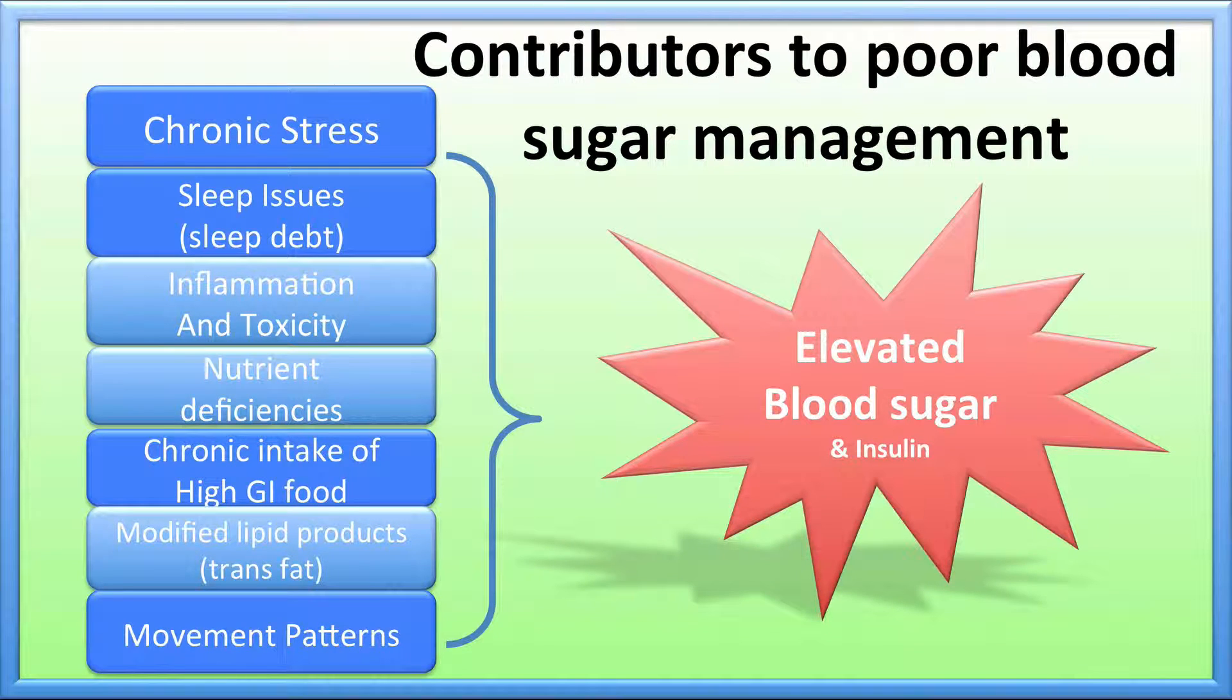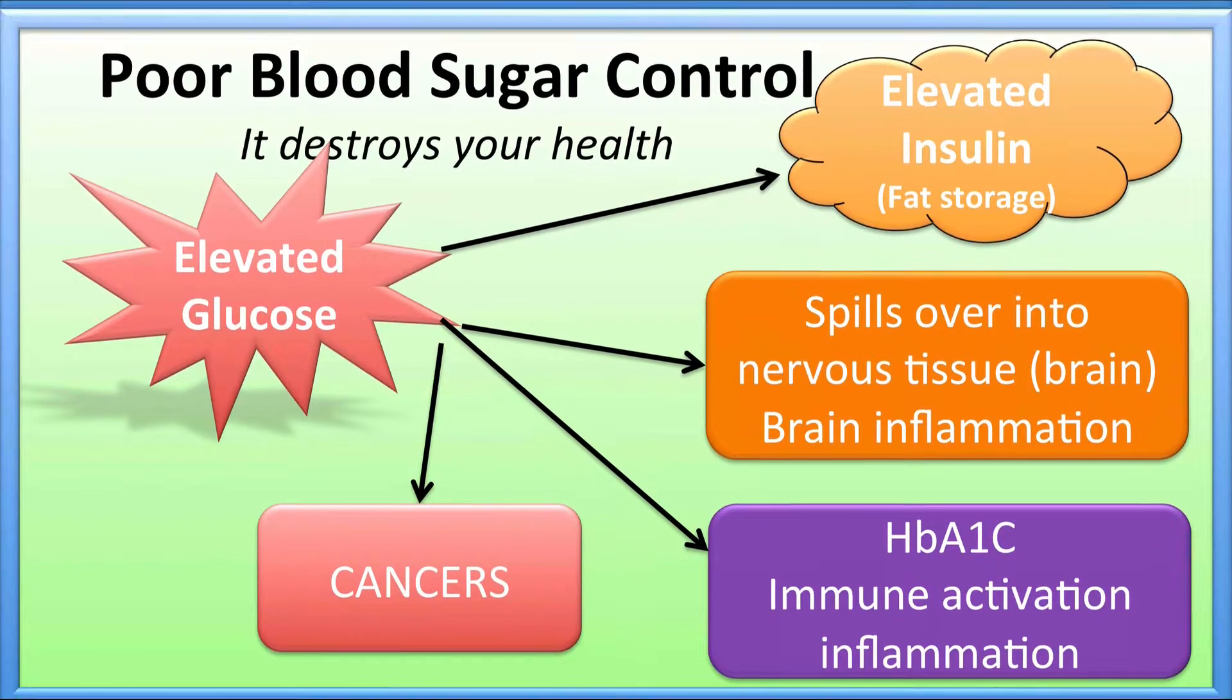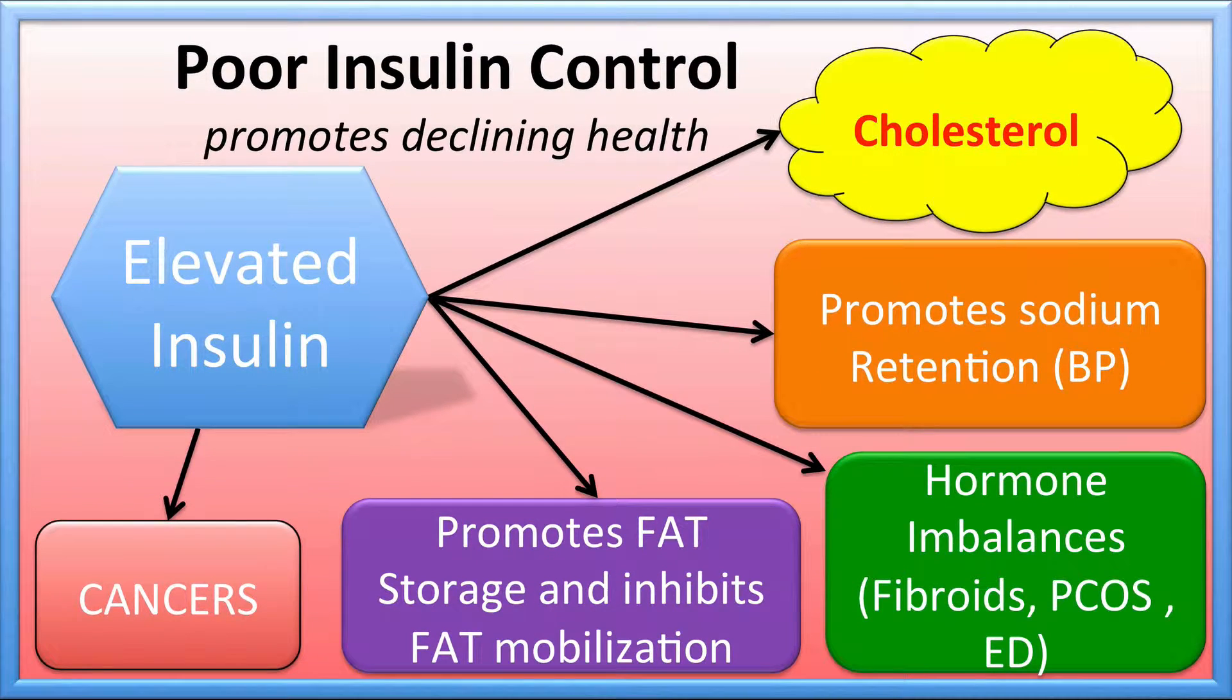There are key contributors to poor blood sugar management, especially chronic stress. We saw how poor blood sugar control and elevated glucose has ramifications on the body, everything from promoting cancer growth, causing glycosylated hemoglobin to go up creating inflammation, spilling over into nervous tissue and the brain.